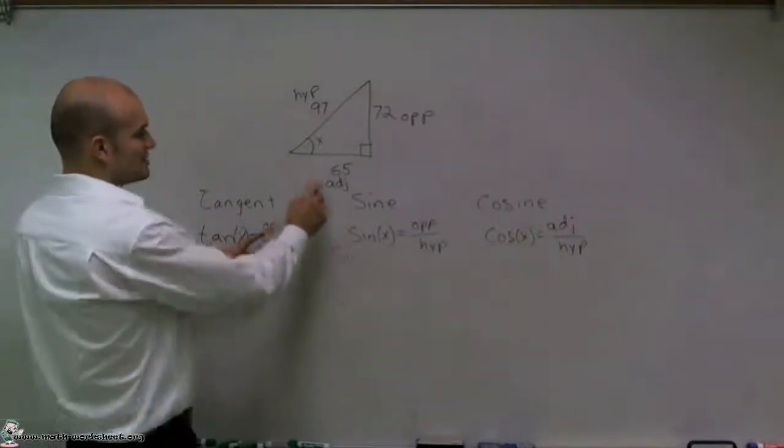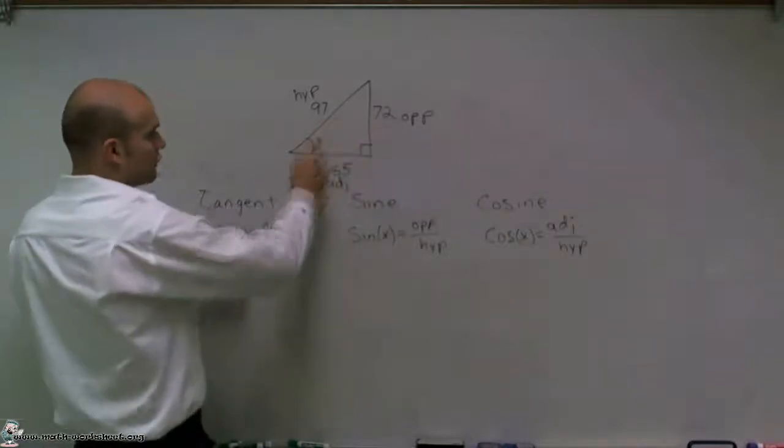The tangent of x means the opposite, which is 72, over my adjacent, which is 65.